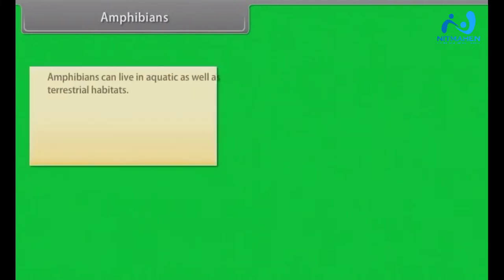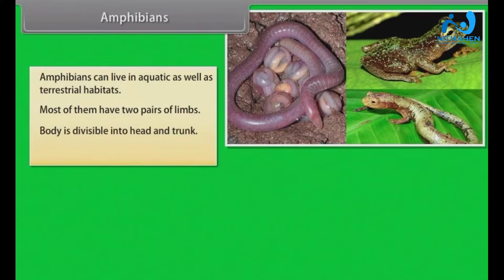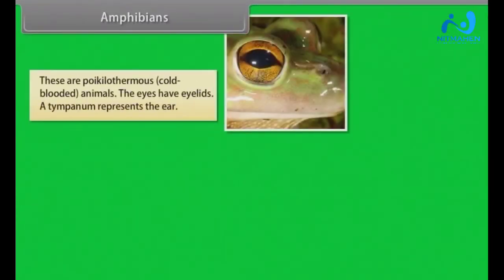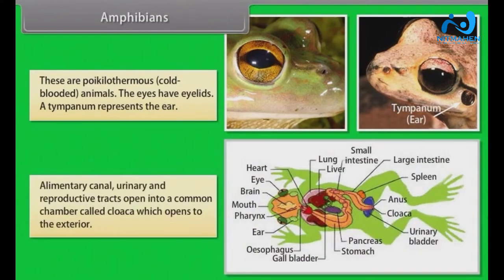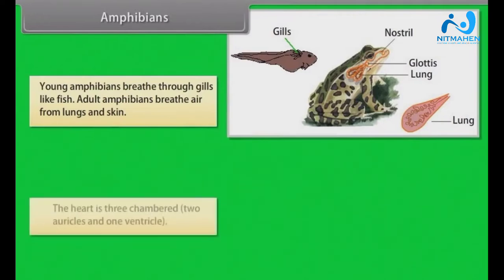Amphibians can live in aquatic as well as terrestrial habitats. Most of them have two pairs of limbs. Body is divisible into head and trunk. Tail may be present in some. The amphibian skin is moist and without scales. They are poikilothermous, that is cold-blooded animals. The eyes have eyelids. A tympanum represents the ear. Alimentary canal, urinary and reproductive tracts open into a common chamber called cloaca which opens to the exterior. Young amphibians breathe through gills like fish.